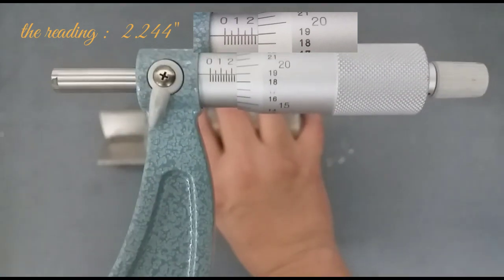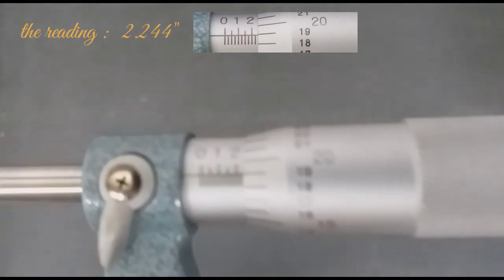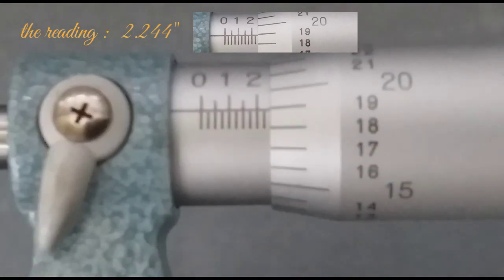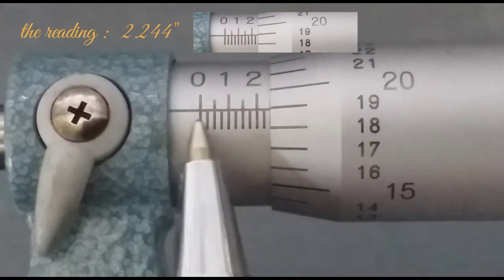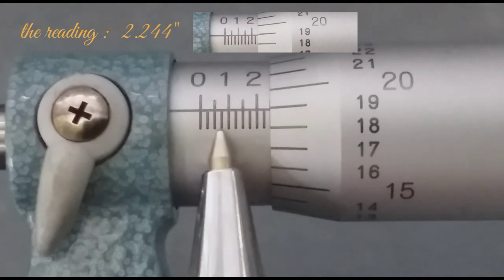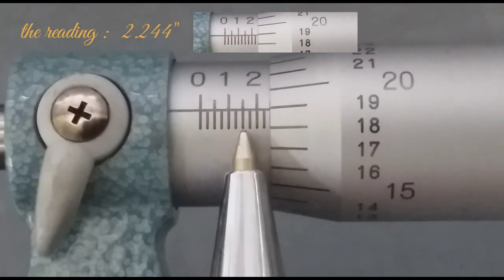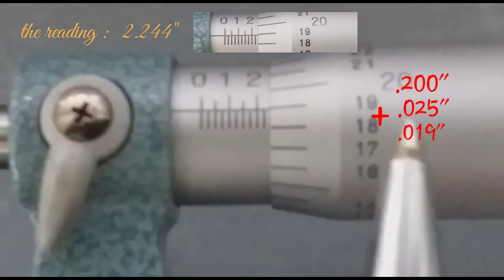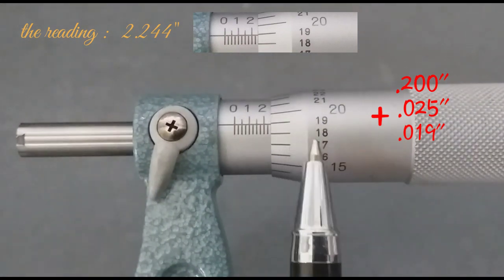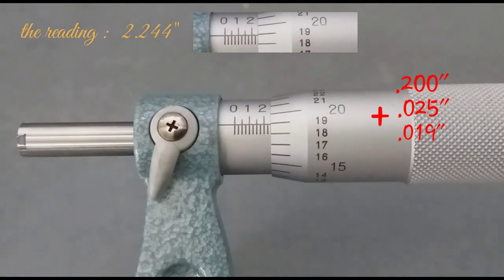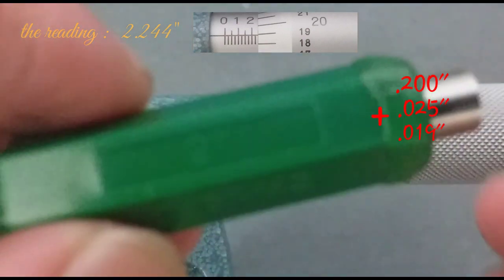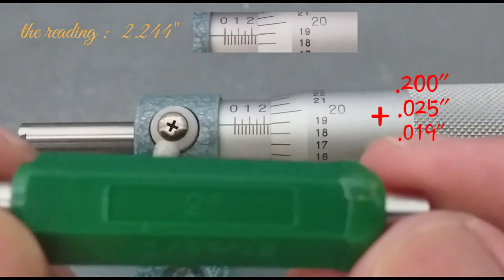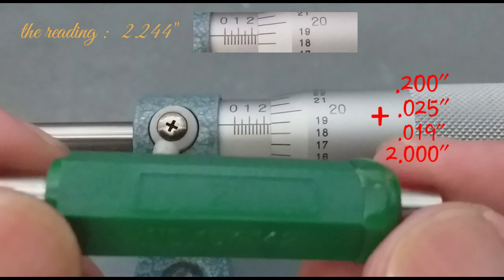The reading is 2.244 thousandths of an inch. This is zero, this is 25 thousandths of an inch, this is 50, this is 75, this is 100 thousandths of an inch. This distance is 25, so that is 200 plus 25 thousandths of an inch, then 17, 18, 19, then plus 19 thousandths of an inch. This is additional to a standard bar range of 2 inches, so we write down 2 inches, then the total is 2.244 thousandths of an inch.